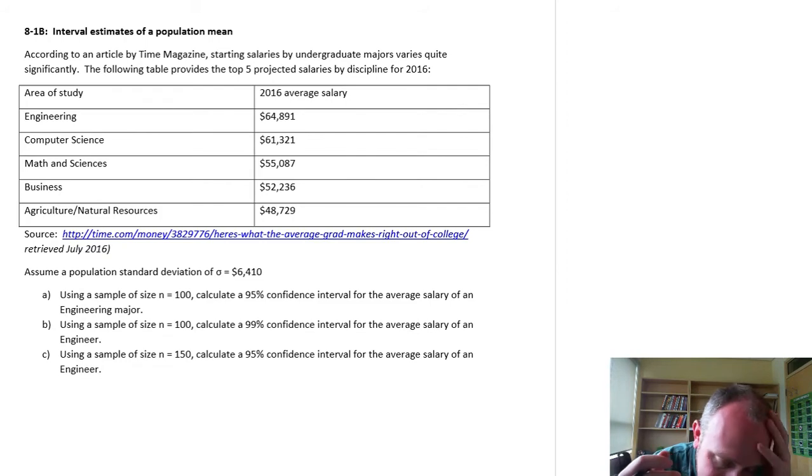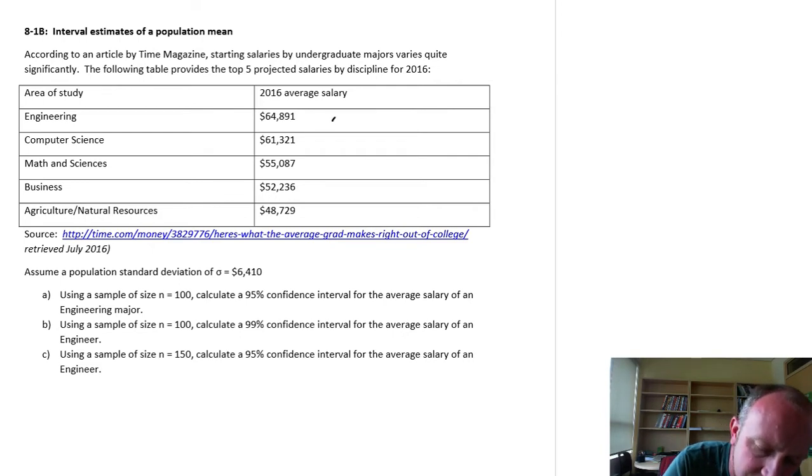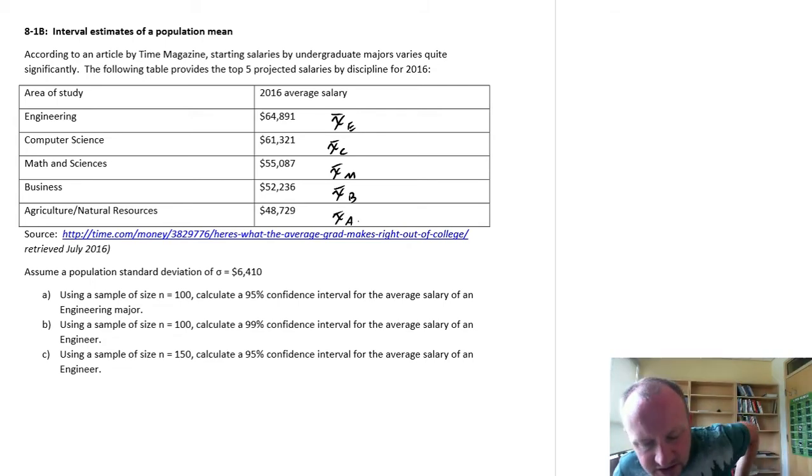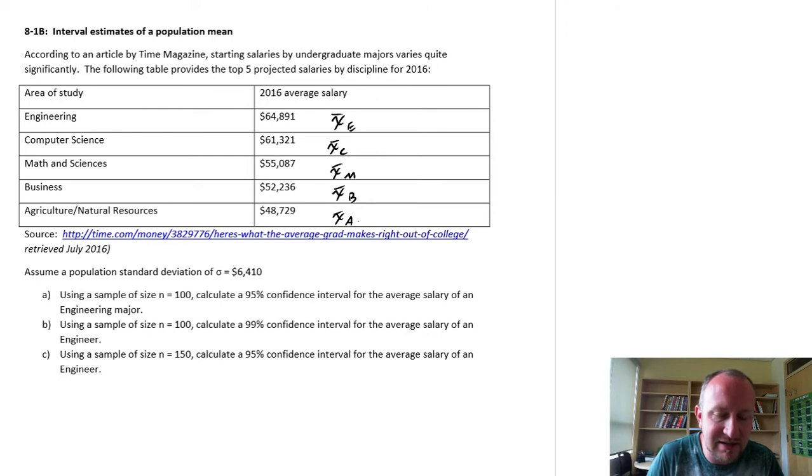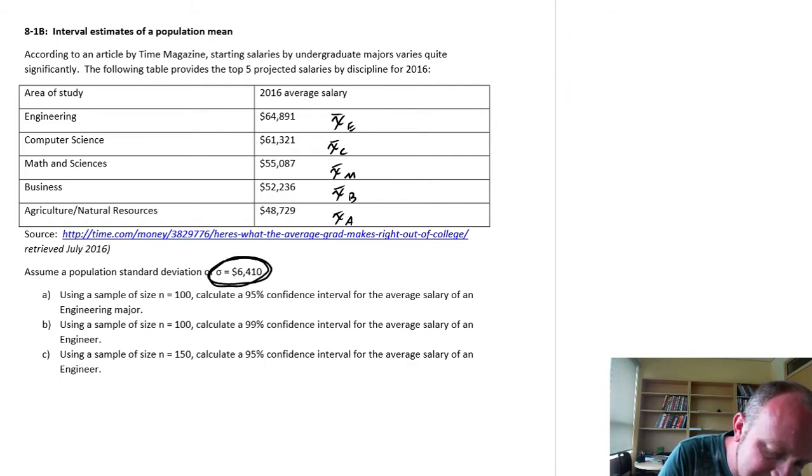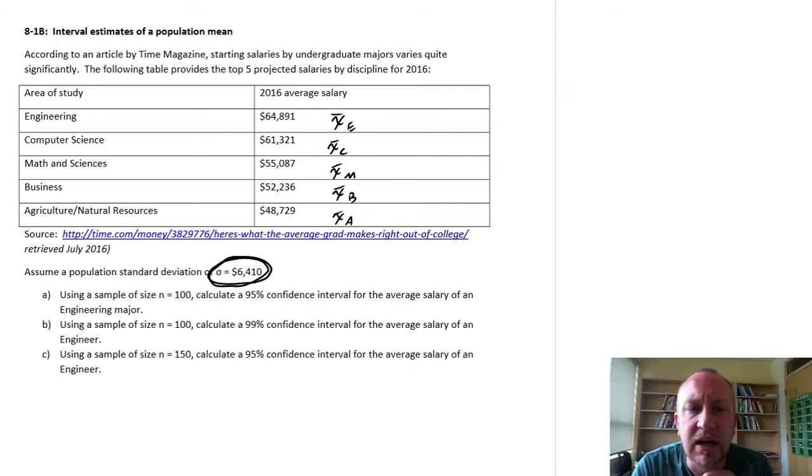So what we're going to do here is look at these as our sample means now. I think in a previous video I may have treated these as population means just to make a point. But here now these are all samples. We know this isn't population data. So this is going to be my sample mean for engineers, here's my sample mean for computer science, sample mean for math and science, business, and let's call this agriculture. Although I don't think I need all of those. So these are our means and then what we're going to do is calculate an interval estimate around these sample means as an estimate of the unknown true population mean mu. The one assumption I'm going to make here is this standard deviation of $6,410.